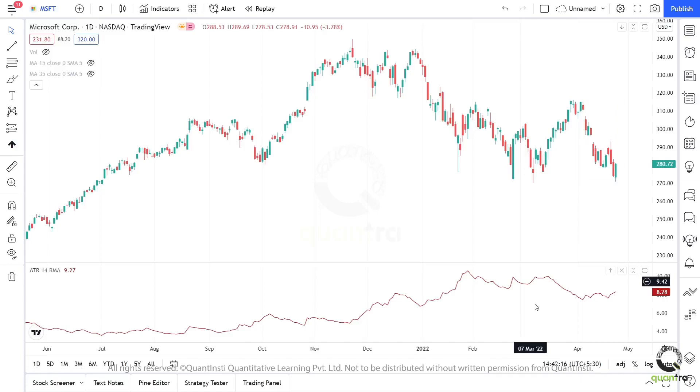Now that we have successfully added the ATR indicator to our chart, let us try and interpret its values. If you observe this zone carefully, you will see that the ATR values were on the lower side. When ATR values are low, the candles seem to be smaller and thus the volatility is minimal. This means that the stock is less likely to make any sharp moves in either direction.